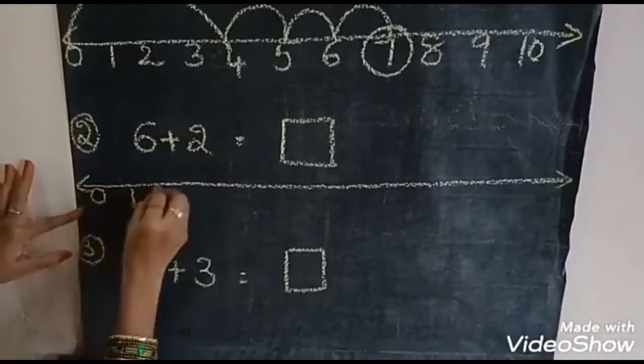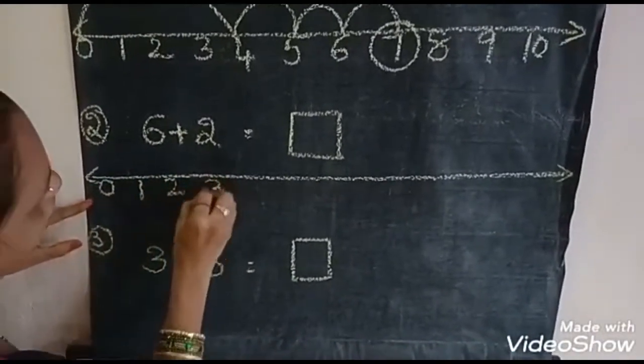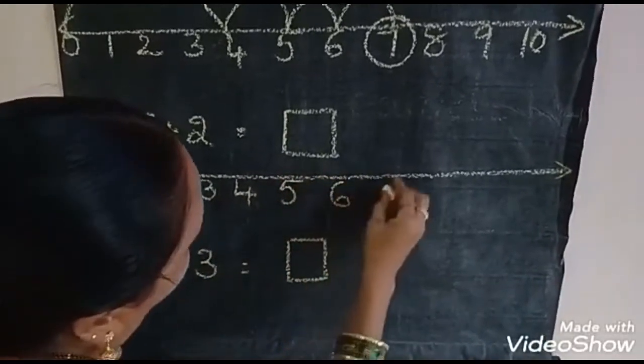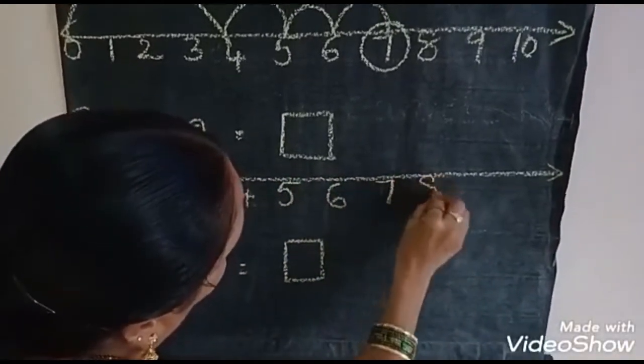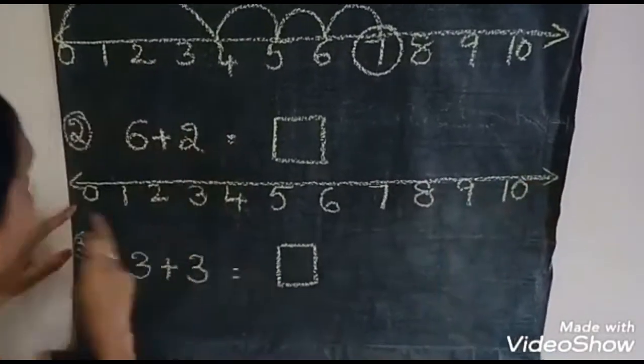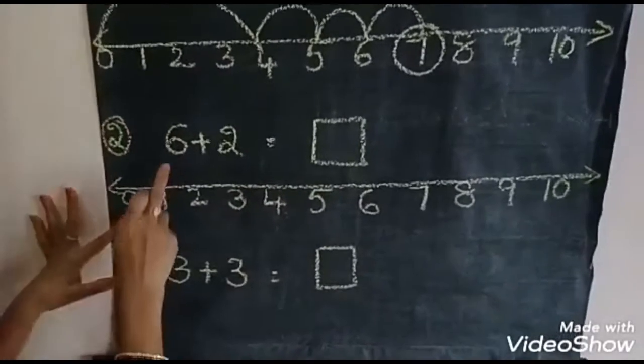0, 1, 2, 3, 4, 5, 6, 7, 8, 9, 10. Here also, 0 to 10 on scale. Okay.